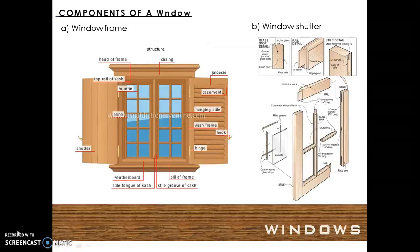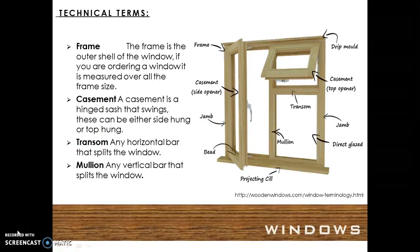The various components of a window are the window frame and window shutter. The frame is the outer shell of the window. If you are ordering a window, it is measured over all the frame size.